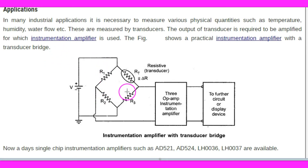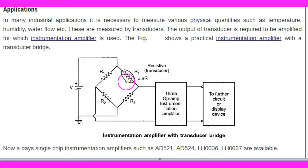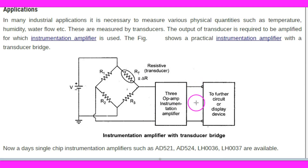This is an instrumentation amplifier with a transducer bridge. There is a bridge circuit and voltage is applied to the bridge. The bridge is balanced, so at the two terminals there is no voltage difference and therefore no output. There is a variable resistance that changes with the physical parameter being measured. When the resistance changes, a differential input appears — the two inputs become unequal — and when the differential inputs are unequal, the instrumentation amplifier gives an output which then drives the display units.